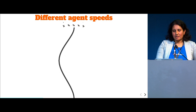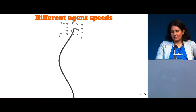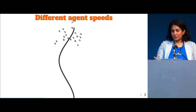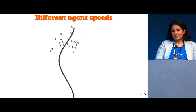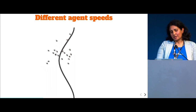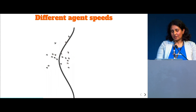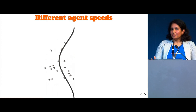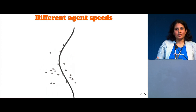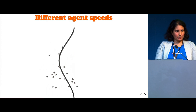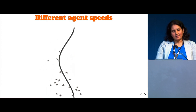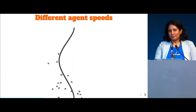I started playing with having different agent speeds. Still using path following, but all agents having a different speed. You can already see that they're passing each other and avoiding each other — there's a bit more interaction going on, but they're still following a path.